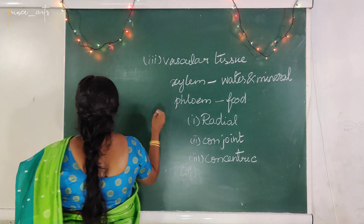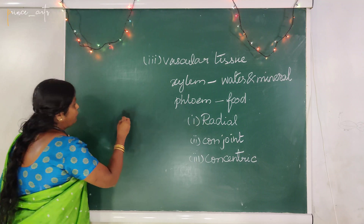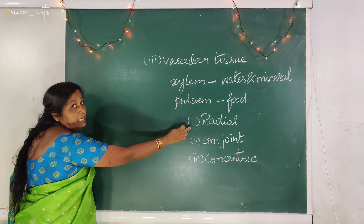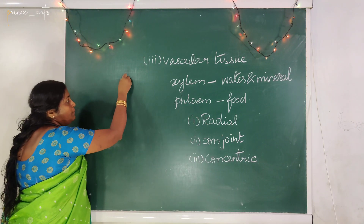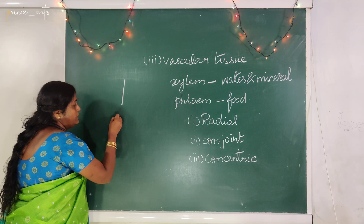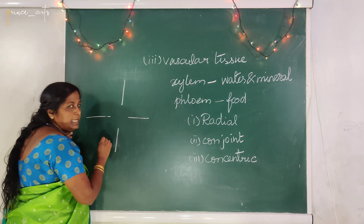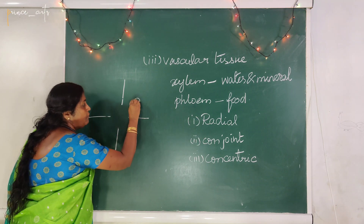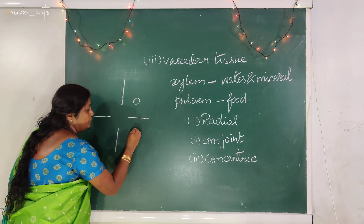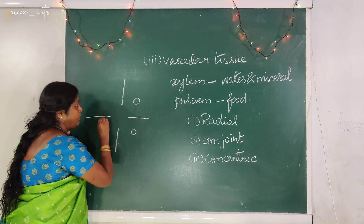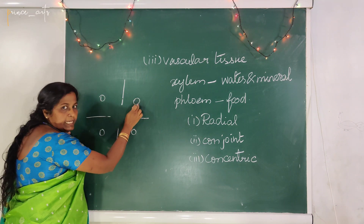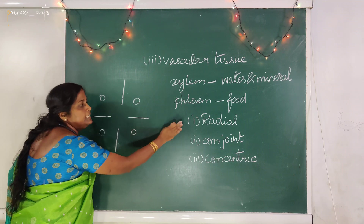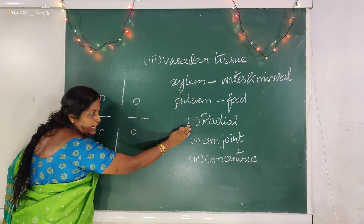For example, roots always have radial bundles — xylem is present and phloem is present alternately. Wherever xylem and phloem alternate along the radius, the bundle is called a radial bundle.